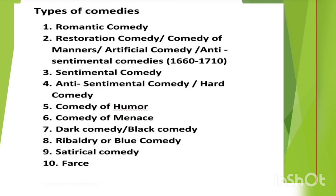Anti-sentimental comedy, or hot comedy, was a reaction against sentimental comedy in the 18th century, taking the form of frustration comedy, such as ridiculing the middle class. It does not use emotions to evoke reflection in an audience and has less vulgarity and profanity. Examples include Goldsmith's She Stoops to Conquer (1773) and Sheridan's The Rivals (1775).